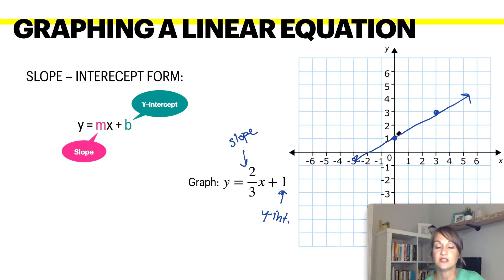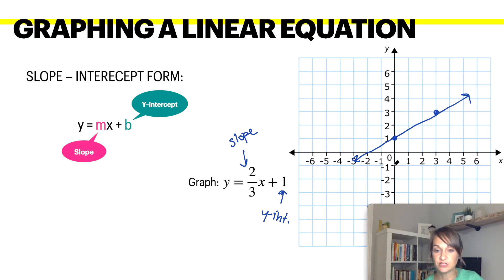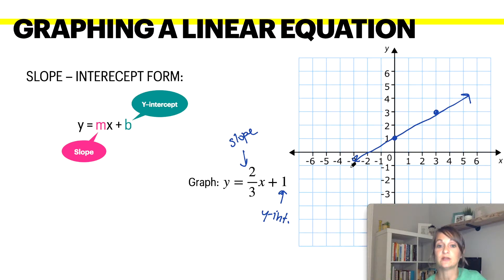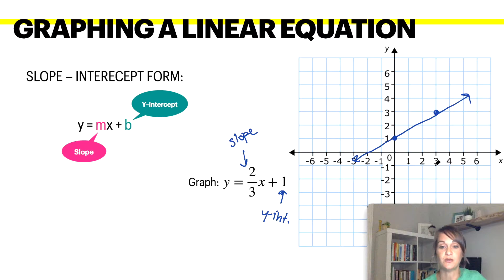Do not forget, you always move to the right. If this was a negative slope, you would have moved down 2 and then to the right 3. Do not move down and left because that will actually cancel each other out, giving you a positive slope. So make sure if it's negative, you move down, but always move to the right.